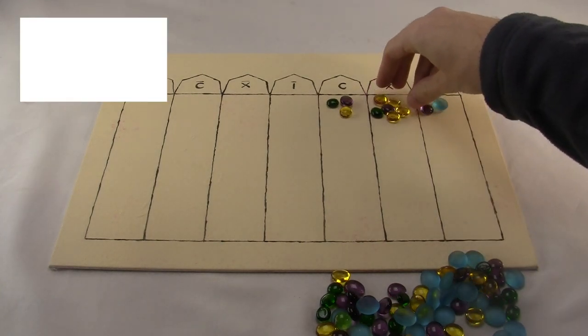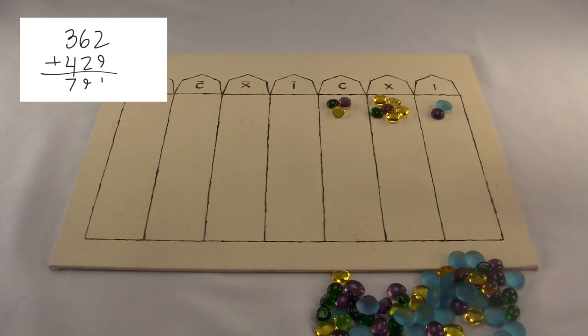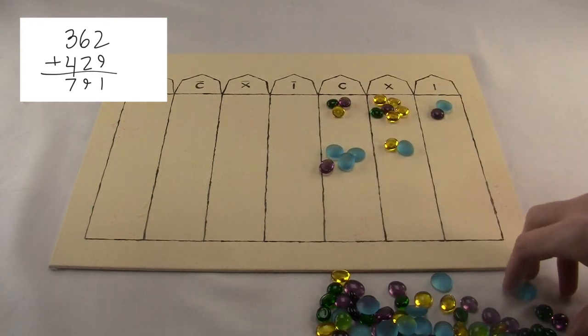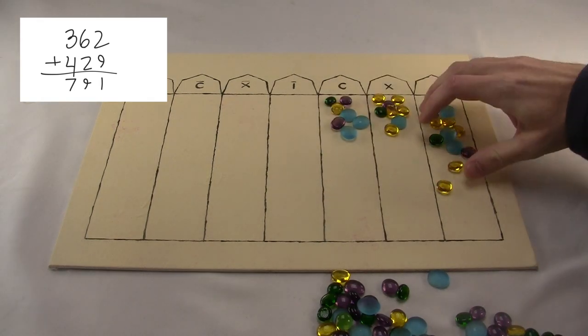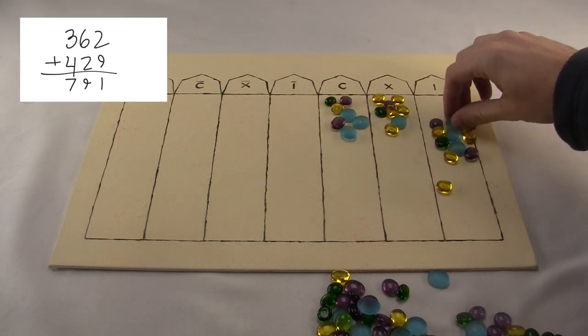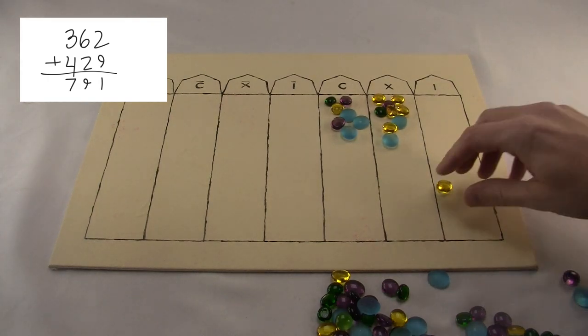Then if I want to add another number, say 429, I just put those ones on there, too, and then jam them all together. You've got to do some regrouping. I've got ten counters over here, so that translates to one counter in the next area. And there's your answer.